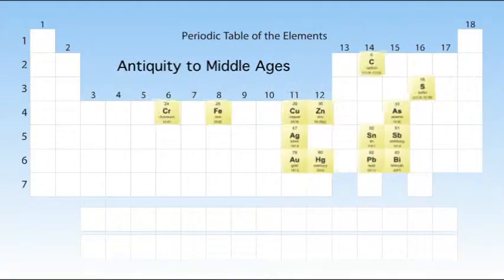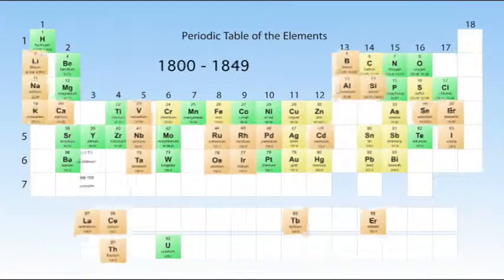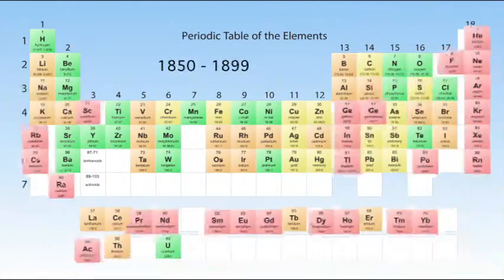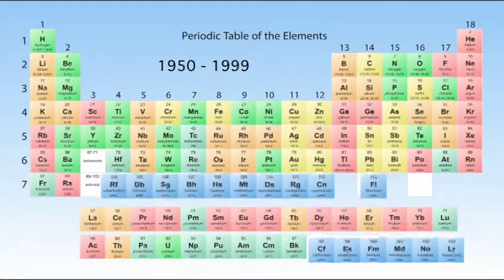When the elements were arranged by increasing atomic number, the periodic pattern was observed without having to switch some elements as Mendeleev did, and holes in the periodic table led to the discovery of new elements.